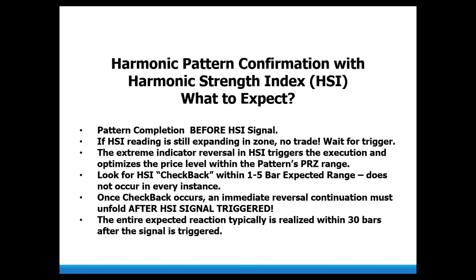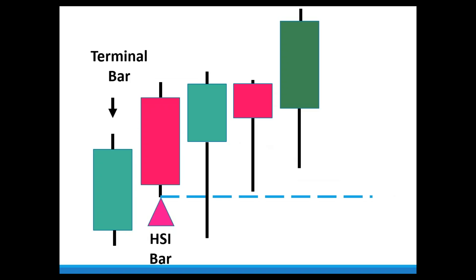The entire expected reaction should unfold within 30 bars after that signal is triggered. In a typical situation, we see the terminal bar form the actual completion point of the pattern, then a couple of price bars thereafter. We get pattern completion, then an HSI trigger, and a final retest of that whole area. In this bullish example, we look for the pattern to complete, stabilize in that zone, and then give us some kind of HSI trigger immediately thereafter.